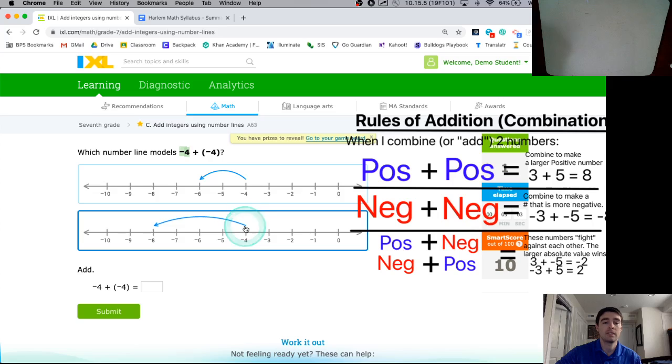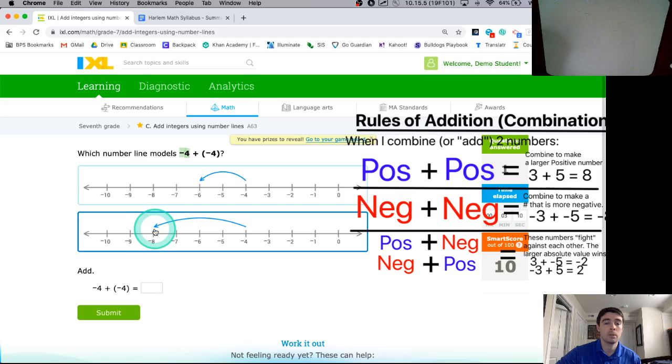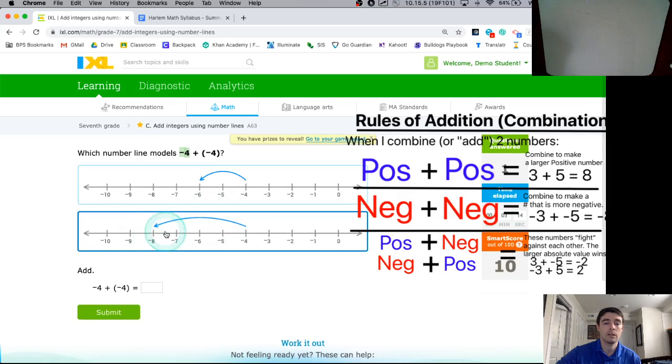Again, any time I add a negative, it's like subtracting, moving left on the number line. So, negative 4 plus negative 4, this number line models and shows me if I start at negative 4 and I take another 4 away, I'm going to now be at negative 8.